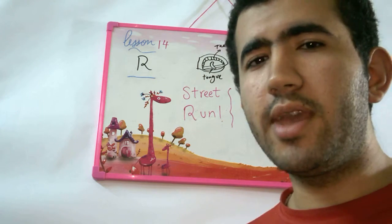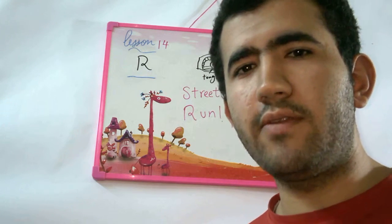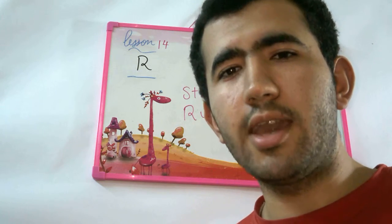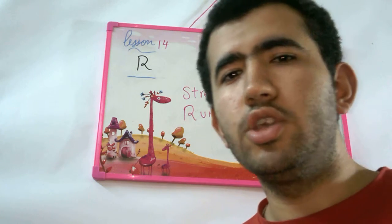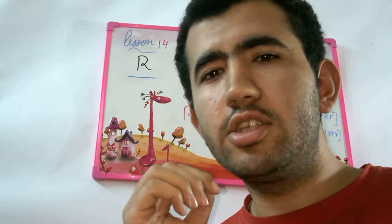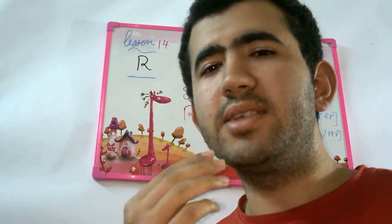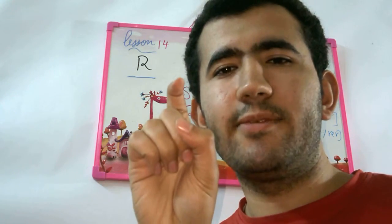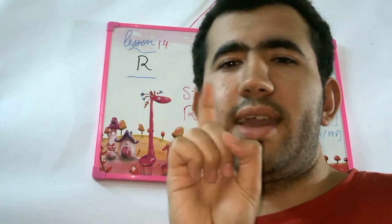So to recap what we've learned today: to make the R sound, your tongue must not or should not touch the other teeth or the ground. It must be in the middle and be like this. R. Great.